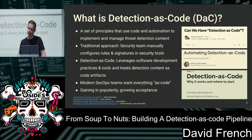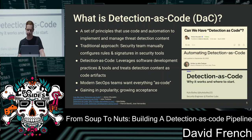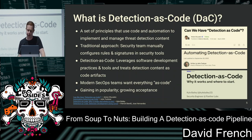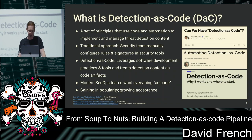Starting with a definition: detection as code is a set of principles that uses code and automation to implement and manage your detection content in your security tools. With a traditional approach, you're logging into your security tools manually — whether that's a SIEM, EDR, or firewall — and writing and managing rules there manually. With detection as code, we're really borrowing DevOps software development practices, using tools to test and deploy things using automation. This aligns with mature security operations teams wanting to manage everything as code — configuration, documentation, response playbooks.